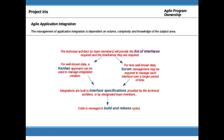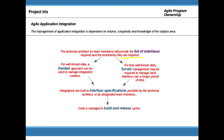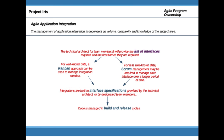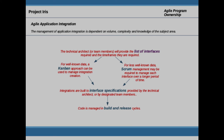Application integration typically starts with an architect looking through the requirements and determining a list of interfaces that will be required, as well as determining the complexity and the time frames they'll be needed. For a well-known application with well-known data and fairly straightforward interfaces, Kanban is a natural approach to manage those integrations. If the data is less well-known and integration development will take longer, then Scrum might be the process the application team uses. Whichever process is used, the interfaces will be built according to the interface specifications created by the technical team, and the code will be managed into the build and release cycles.